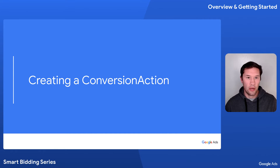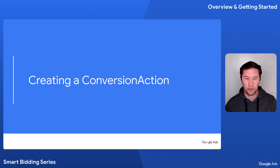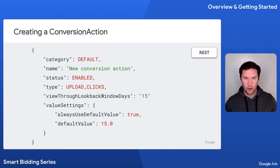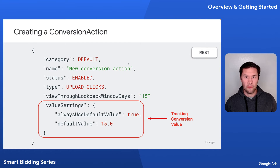Next, we'll take a look at an example of how to create a conversion action. Enabling conversion tracking requires different steps depending on the type of conversion you're interested in. For the sake of simplicity, I'll focus on click conversions. For details on setting up other types of conversion actions, see our conversion guide, which is linked in the description. Here's an example of a simple conversion action that will enable click conversion tracking. Note that we've set the value settings field, which means that this action will track conversion value, which is preferred when using Smart Bidding.